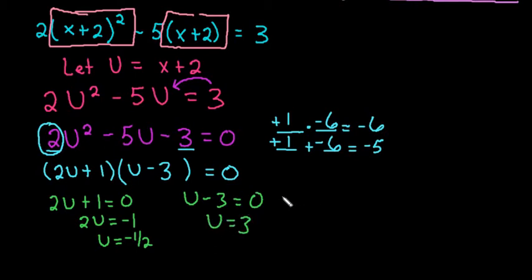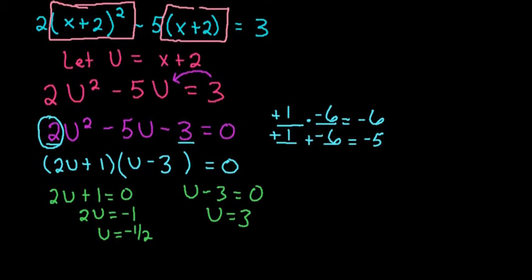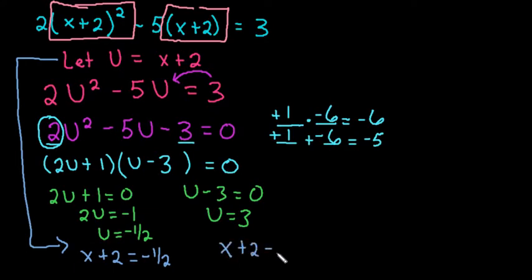Remember that we're not done because we're not solving for u. We're solving for x. So what we want to do is we want to go back and we want to take and replace this back into our equation. So we're going to let u equal x plus 2. So we're really solving the equation x plus 2 equals negative 1 half. And we are solving the equation x plus 2 equals 3.